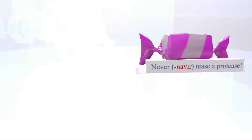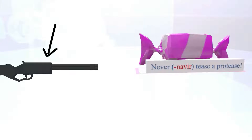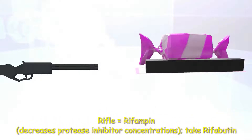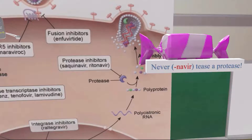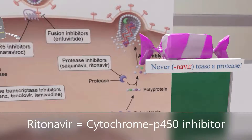Diarrhea and other GI symptoms are adverse effects of the protease inhibitors. You may have noticed a rifle shooting our sign — the rifle reminds us of rifampin, and the destroyed sign reminds us that rifampin decreases protease inhibitor concentrations. That's why patients with HIV taking protease inhibitors should not take rifampin; they should take rifabutin instead.